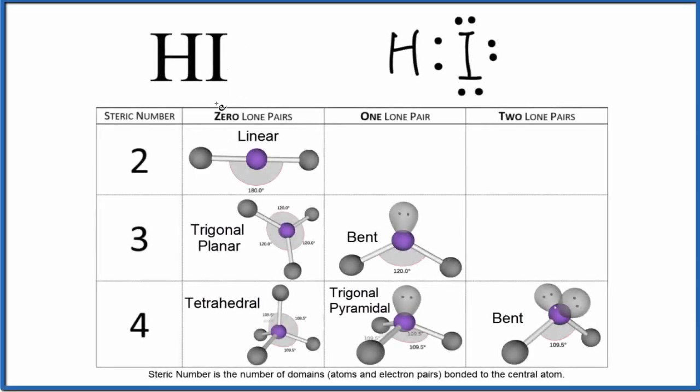Let's take a look at the molecular geometry for HI. This is hydrogen iodide, we're probably talking about this in the gas phase here. So hydrogen iodide, when we do this we need to start with a Lewis structure.